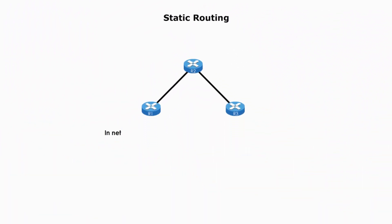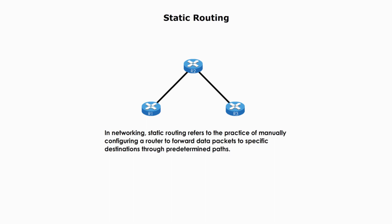What's static routing? In networking, static routing refers to the practice of manually configuring a router to forward data packets to a specific destination through predetermined paths. Static routing is generally used in small networks where there's a limited number of devices and the network is relatively simple. It is also useful in situations where network security is a concern, as it allows an administrator to have more control over the path that data packets take.